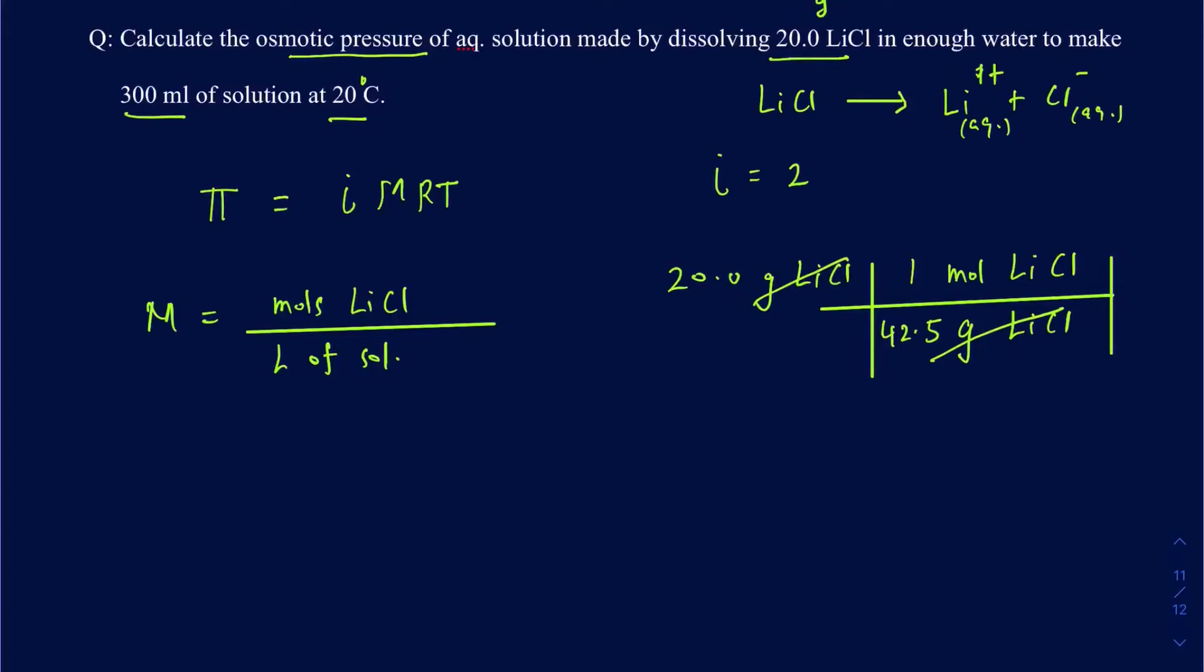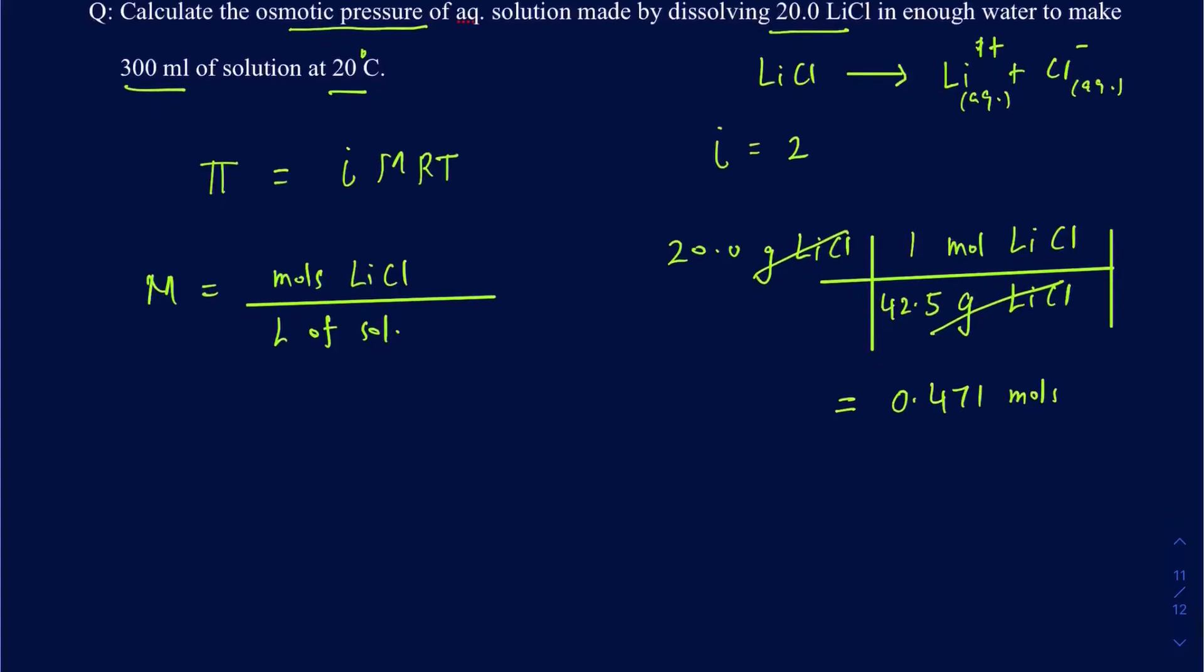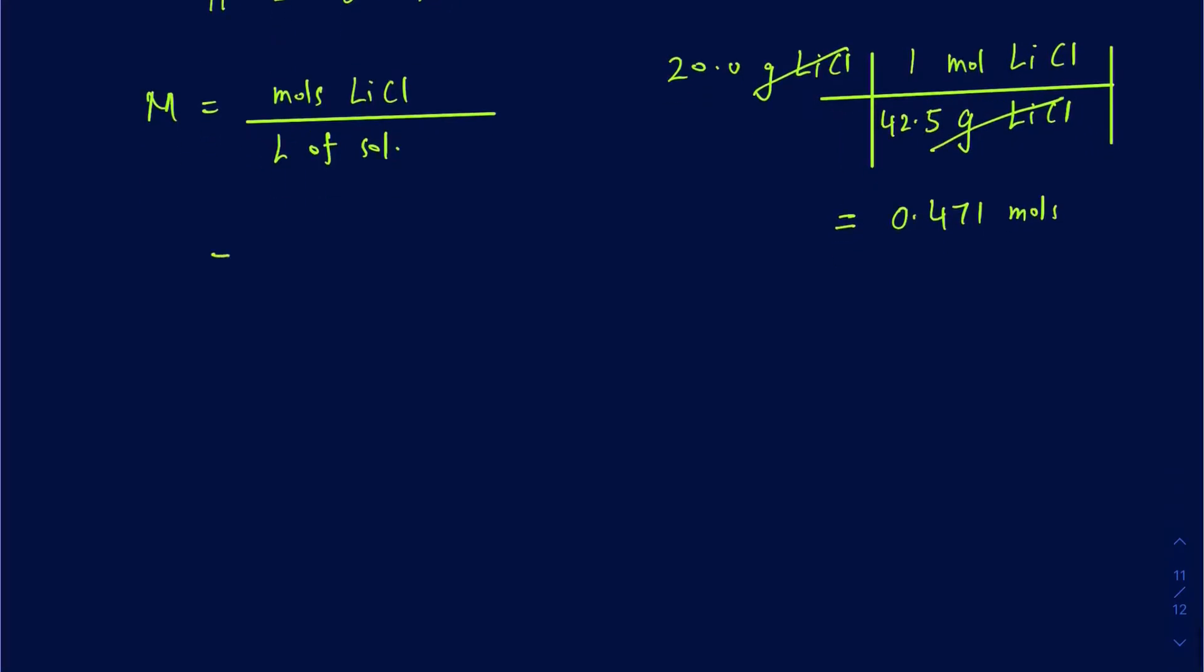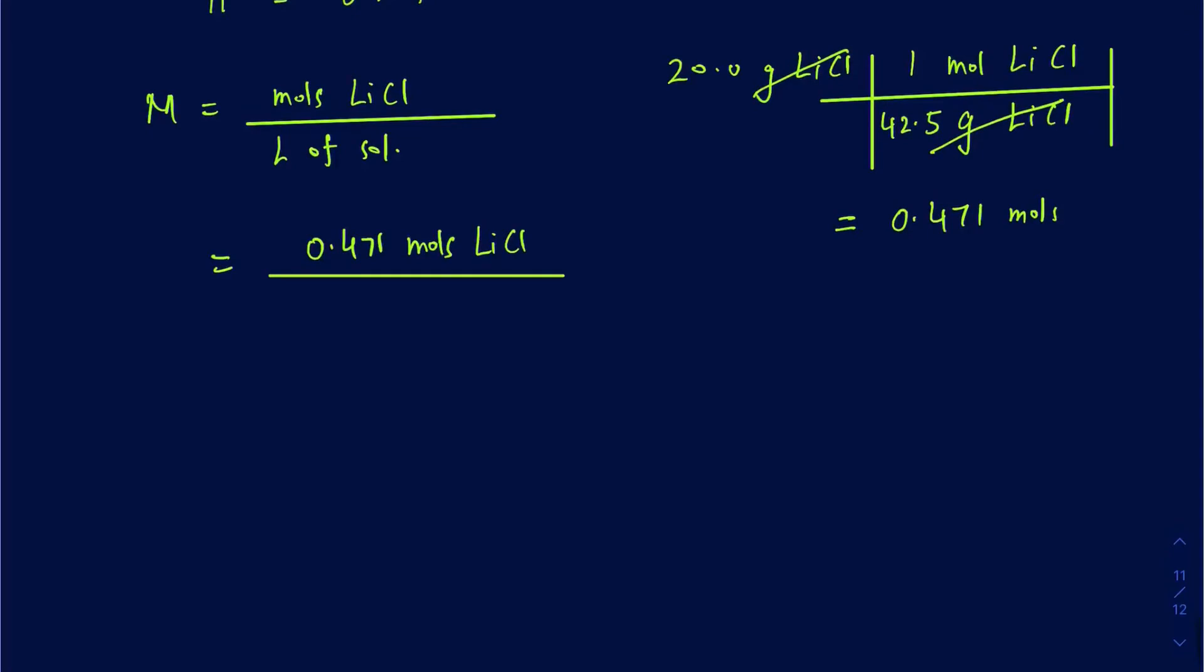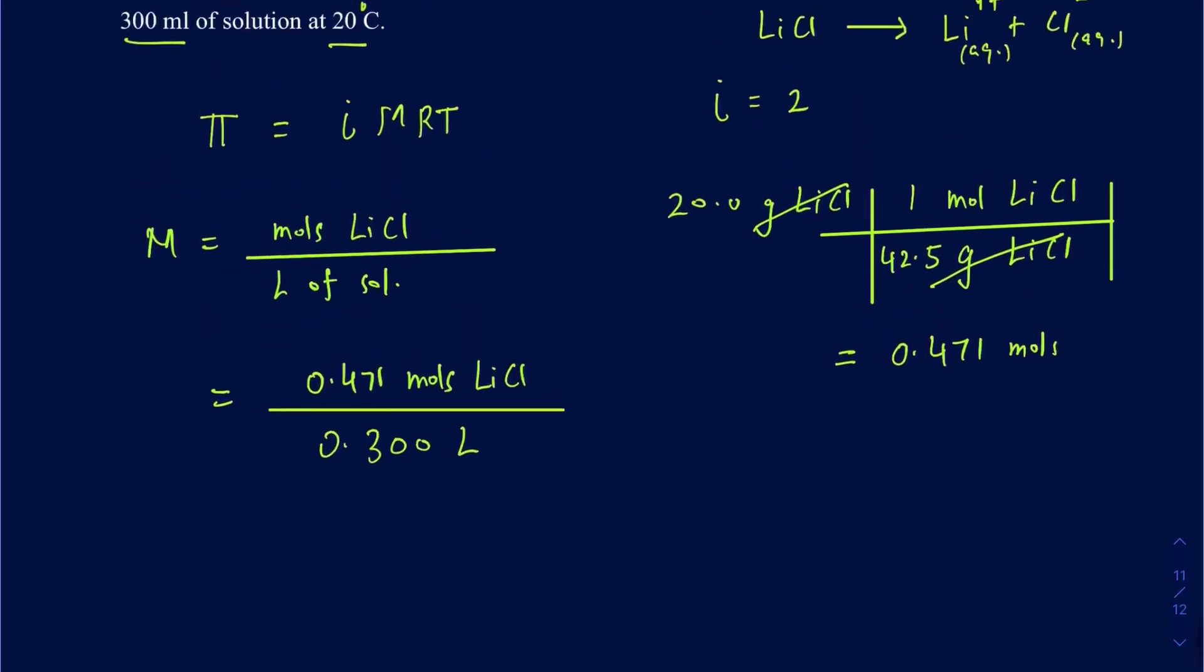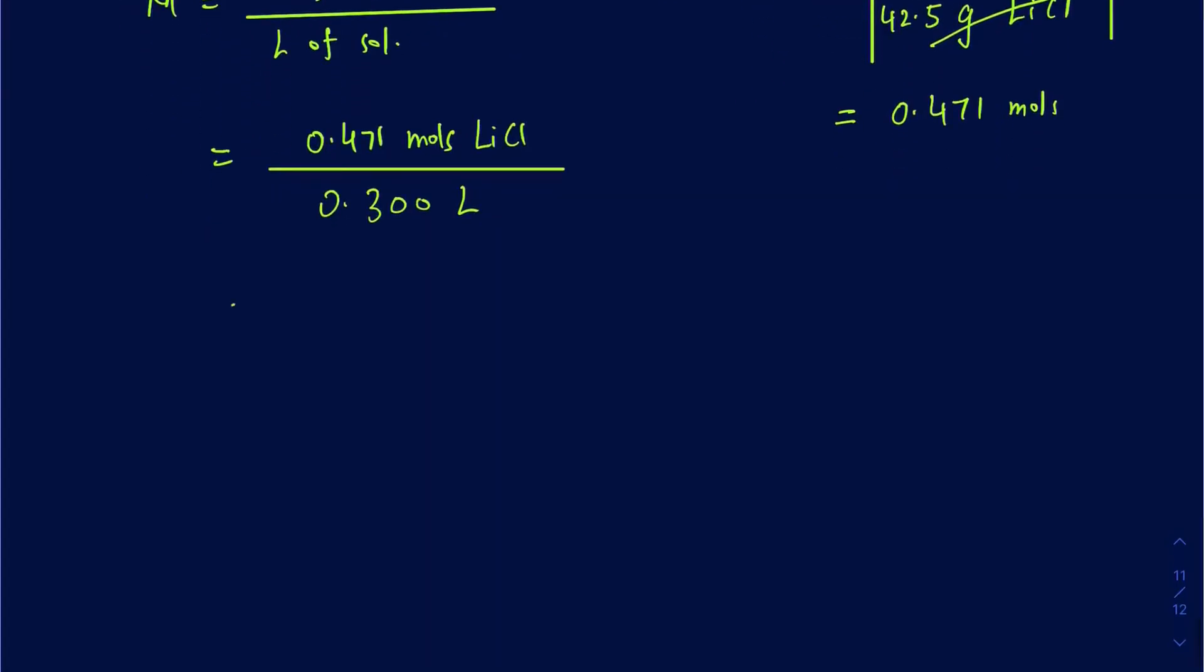So that cancels out and that gives you 20 divided by 42.5. So your moles comes out to be 0.471. So then I can go down and calculate the molarity. Your molarity is going to be 0.471 moles of LiCl divided by the liters of the solution, and we're using 300 milliliters. So 300 milliliters is going to be 0.3 liters. So make sure you can go back and forth between the liters and milliliters quickly. So that's going to be 1.57 molar.